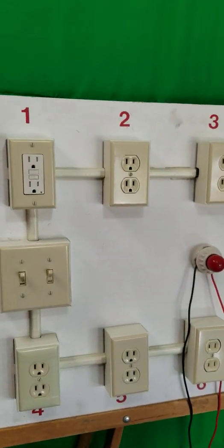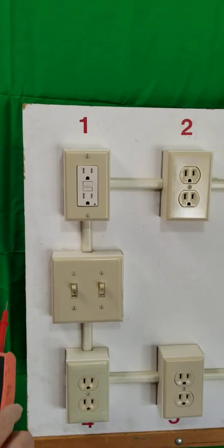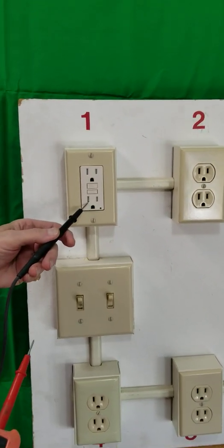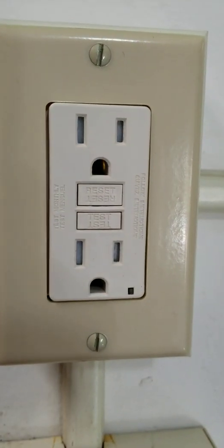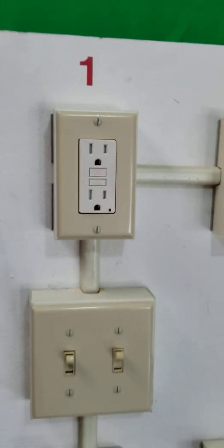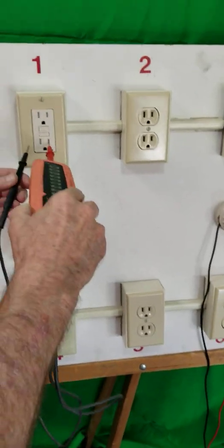Behind me I have what's called a test board. Number one, the test receptacle is a GFCI. This receptacle, if you look closely, the slots look like they're closed in. That's because it's a tamper-proof receptacle. Tamper-proof is the newest type of receptacle that all new installations will probably have.